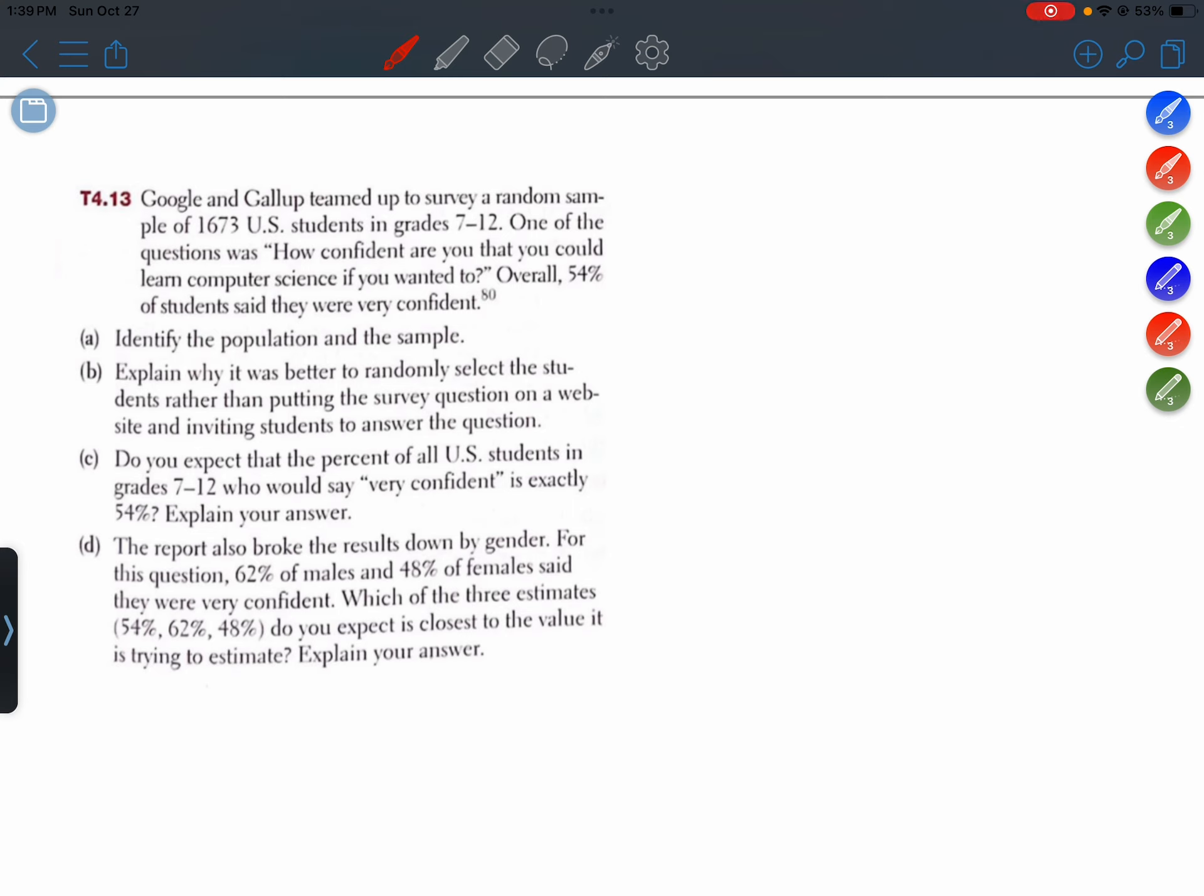Part A. Identify the population and the sample. All right. So the population is all U.S. students in grades 7 to 12. And the sample is the 1,673 U.S. students in grades 7 to 12.